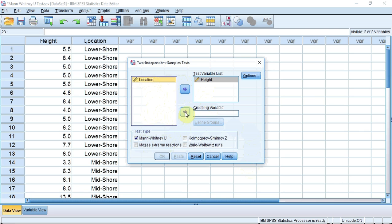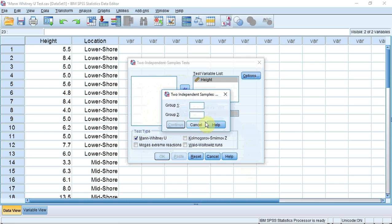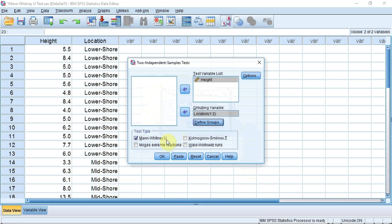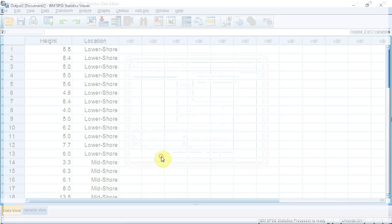And select it using the arrow. We now need to tell SPSS which groups we're going to use, so I'm going to click define groups. The first group was group 1, which was the lower shore. The second group was group 2, which was the mid shore. I now press continue. I'm now ready to OK and run the test.